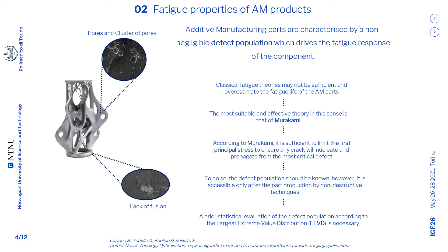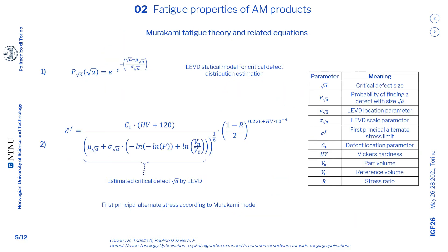Murakami demonstrated that the defect population follows the Largest Extreme Value Distribution, LEVD. Equation 1 expresses the LEVD distribution. It states the probability p of finding a defect of dimensioned square root of area a, which represents an equivalent measure for the defect's area. It is characterized by two main parameters, mu and sigma, which are the location and scale parameters of the distribution respectively. These parameters can be estimated experimentally by looking at the defect population of several samples. Reversing equation 1, it is possible to foresee the largest defect area, square root of a, under a certain probability p, and this can be employed within equation 2.